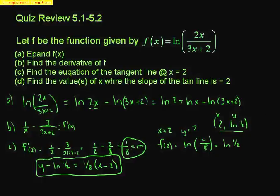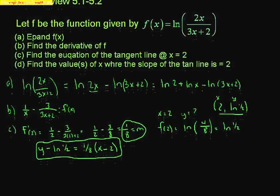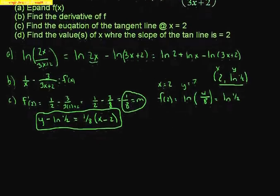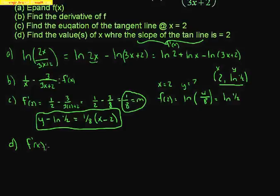For part d, find the values of x where the slope of the tangent line equals 2. The slope of the tangent line means the derivative. So I take the derivative from part b — 1/x minus 3/(3x + 2) — and set it equal to 2, then solve for x.